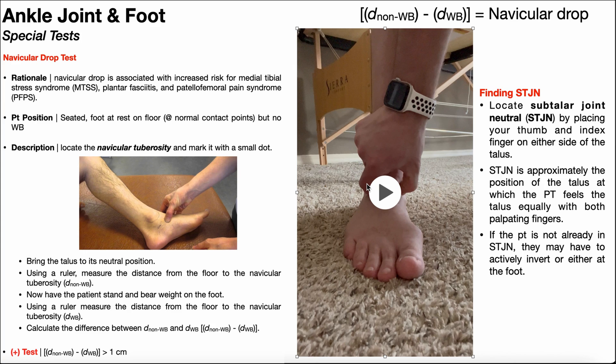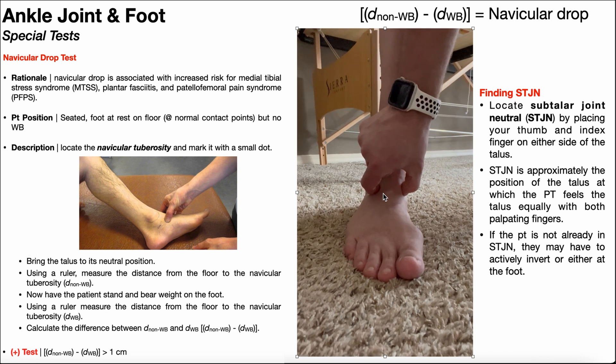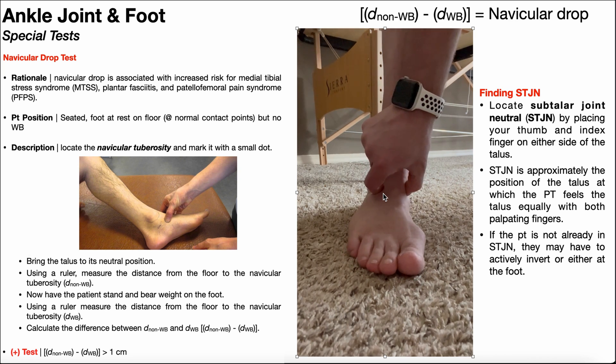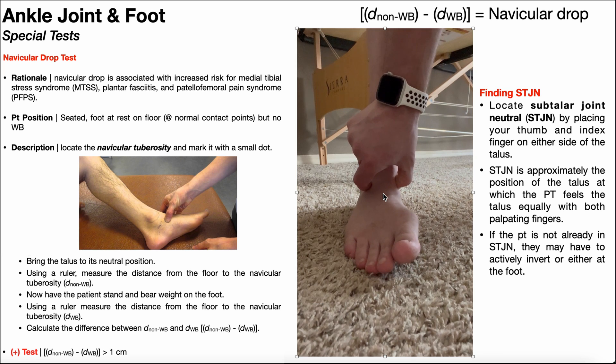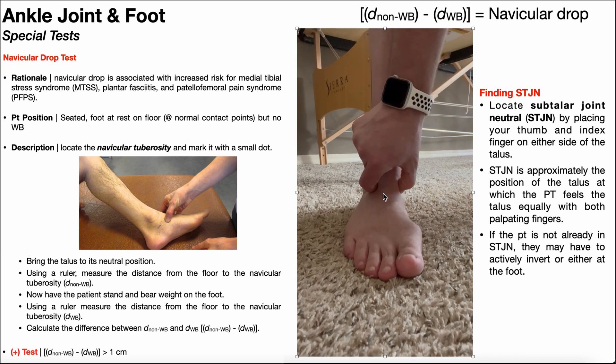In order to find it, the patient's going to have to invert or evert depending on where their neutral is until the PT feels that talus equally with both fingers. There's a little bit of eversion, a little bit of inversion, might take a little toggling to find. But once the patient has found that subtalar joint neutral, they're going to hold that position.